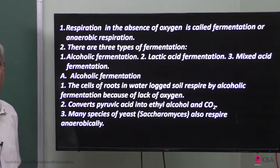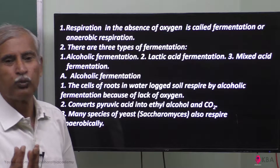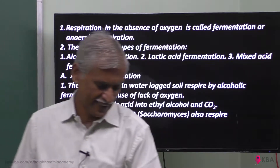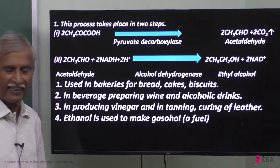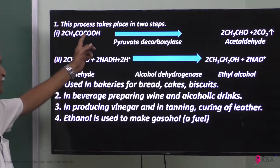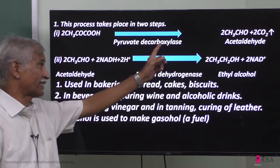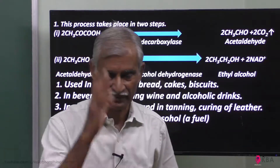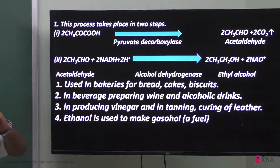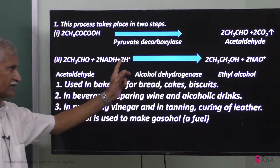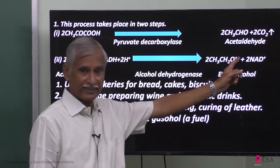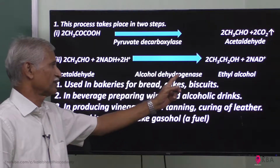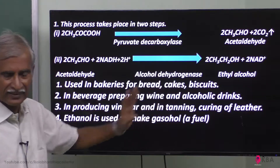Mainly, species of yeast use this method. The pyruvate dehydrogenase enzyme acts on pyruvic acid and converts it into carbon dioxide — this is the first step. Then, reduced NAD, that is NADH plus hydrogen ions, in combination with acetaldehyde dehydrogenase forms ethyl alcohol. The enzyme responsible for forming ethyl alcohol is alcohol dehydrogenase.